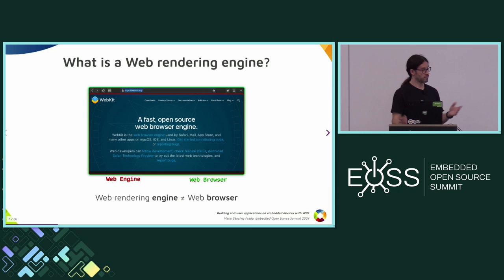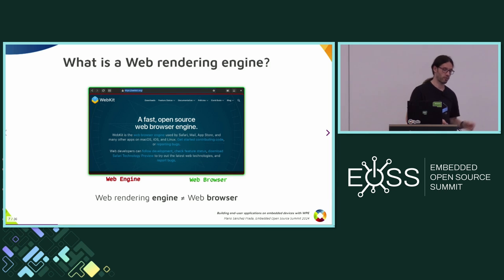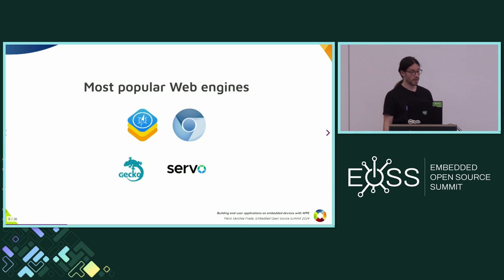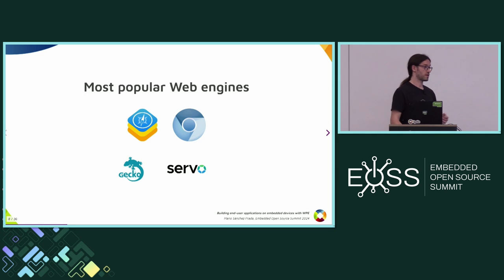A distinction worth making: a web engine is not a web browser. In the case of WebKit, this is an important distinction. The web browser is what you build with a web engine — the web engine is the component that does all the work. It's not the address bar or back/forward buttons. These days the most popular web engines are WebKit, Blink (used in Chromium), Gecko (used by Firefox), and Servo — written in Rust, which Igalia took over from the Mozilla Foundation.